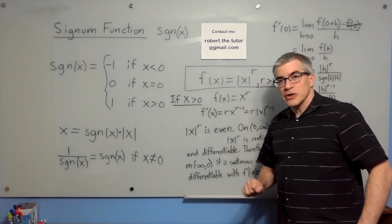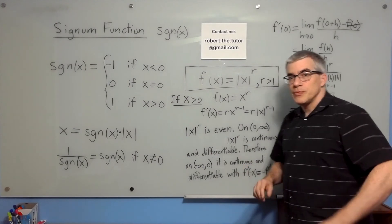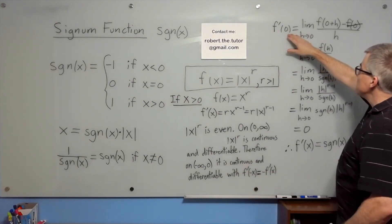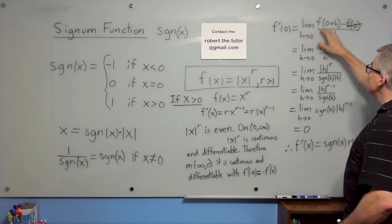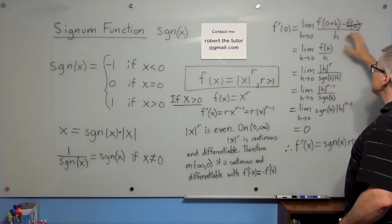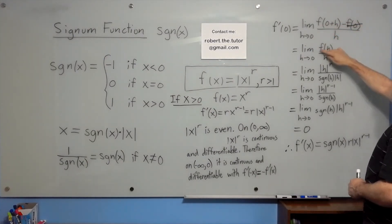Now if I'm going to use a signum function, I have to take care of the case zero. For that, we use the definition of the derivative. f prime of zero is limit h approaches zero, f of zero plus h minus f of zero over h. This becomes f of h over h.